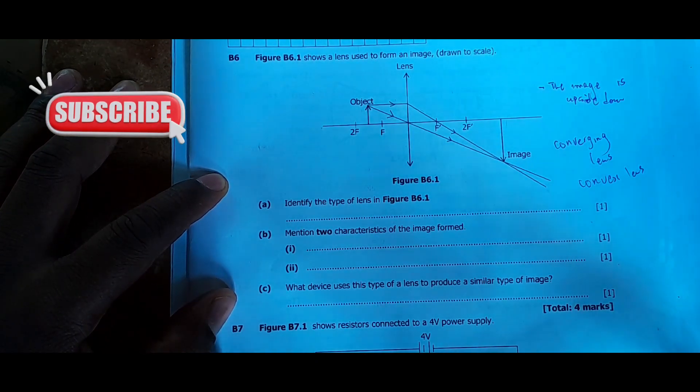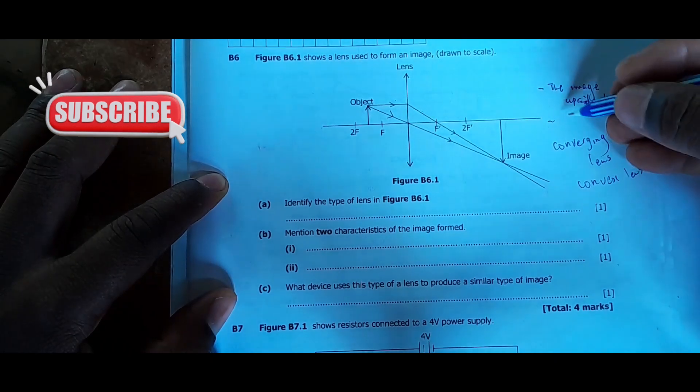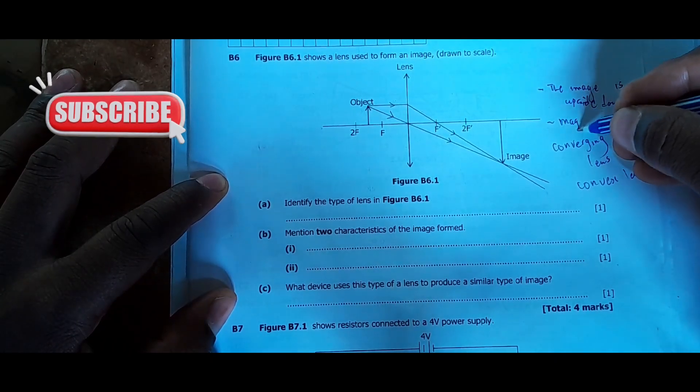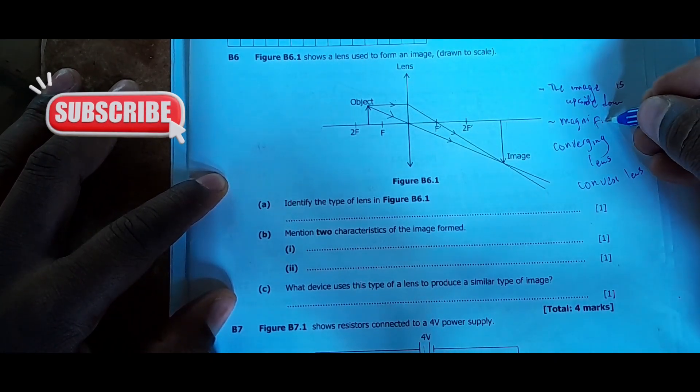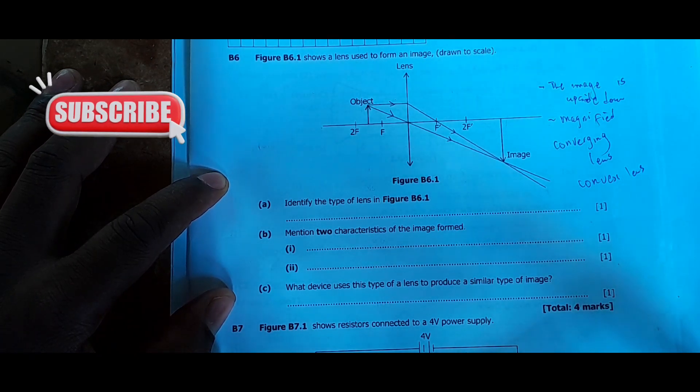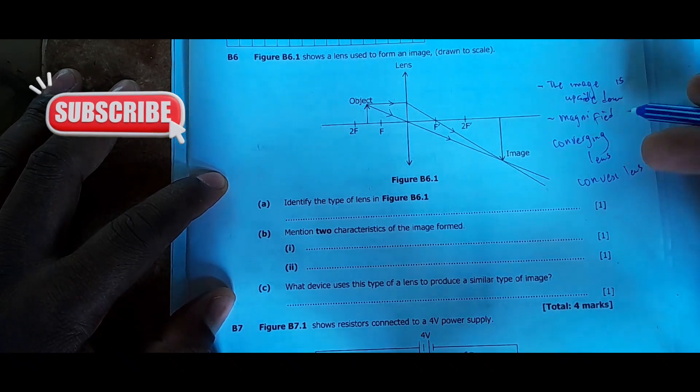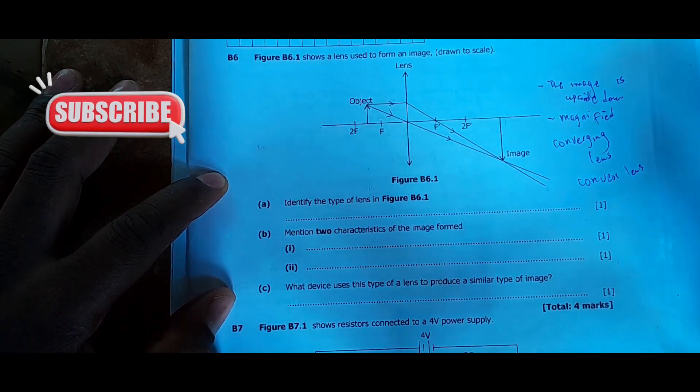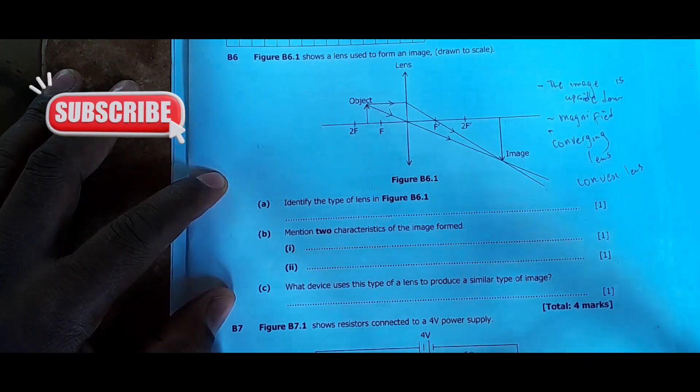The other thing is the image is magnified. Now when you're writing answers, when you're answering questions on an exam, write as if you're writing for a person who knows nothing. So include those words that I'm including when I'm just saying this verbally. So saying the image is magnified, though here I'm just writing magnified because I'm trying to save one space.